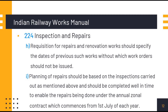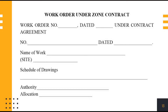The Indian Railway Works Manual has two references in connection with zonal works contracts. In Para 224, under the heading Inspection and Repairs, it says a requisition for repairs and renovation works should specify the dates of previous such works, without which work orders should not be issued. Planning of repairs should be based on the inspections carried out and should be completed well in time to enable the repairs being done under the annual zonal contract, which commences from 1st July of each year.